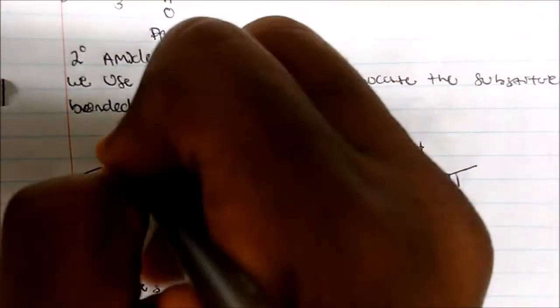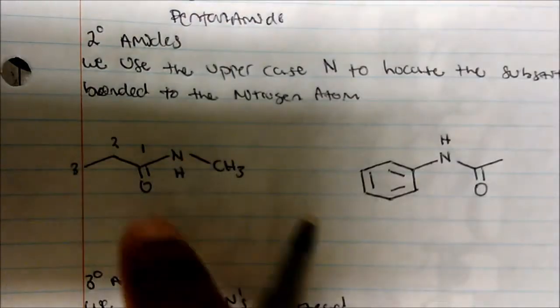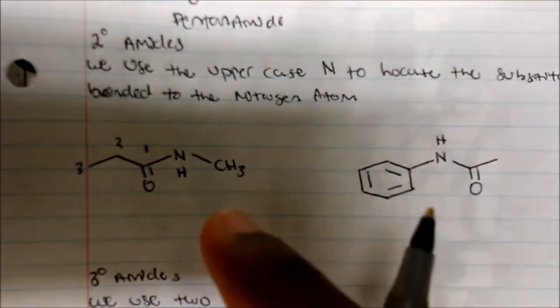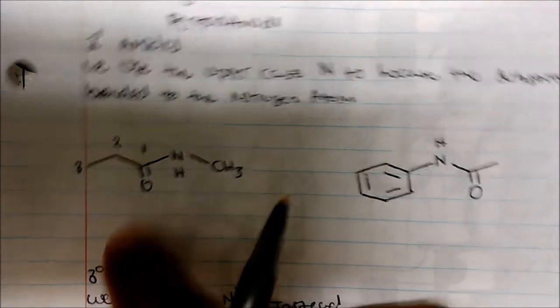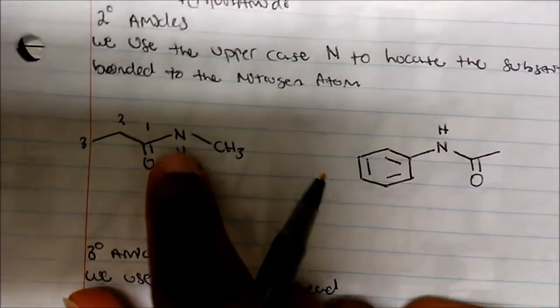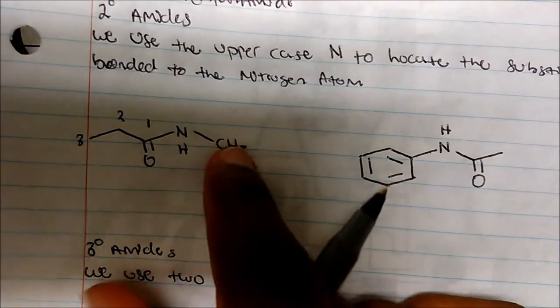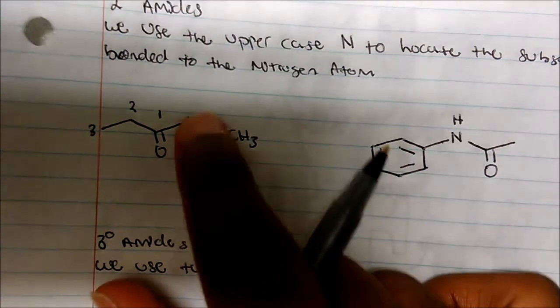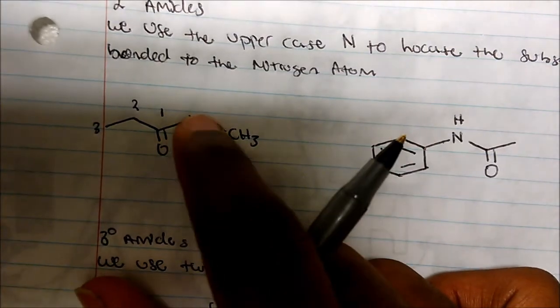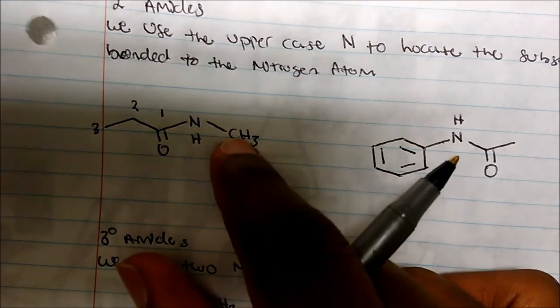First, identify the longest continuous carbon chain for the parent name: one, two, three — so the parent is propanamide. Then we use N to locate the substituent on the nitrogen. Here the substituent is a methyl group, so this is N-methylpropanamide.